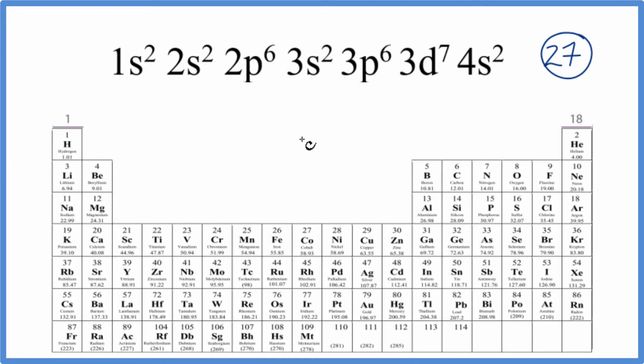Because of that, because they're all neutral, what that tells us is the number of protons, the atomic number, equals the number of electrons. So we just find atomic number 27 right here, cobalt. So cobalt, that is the element that represents this electron configuration up here.